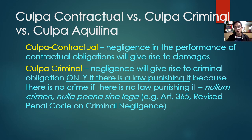Remember the Latin maxim: nullum crimen nulla poena sine lege — there is no crime if there is no law punishing it. So if negligence has no law punishing it, it is only a quasi-delict. But if there is a law punishing that negligence, then it becomes culpa criminal. In culpa criminal, there is no contract involved — just negligence with a law that makes it criminal.